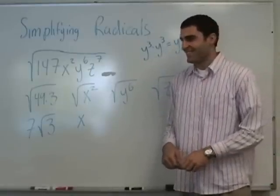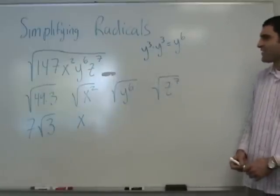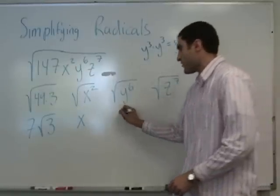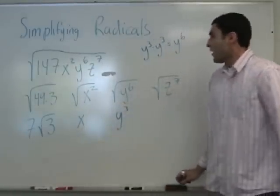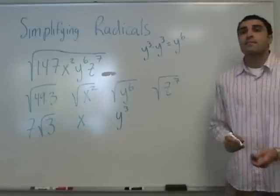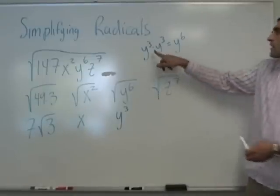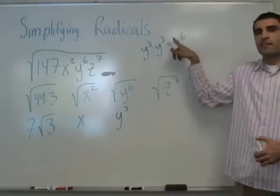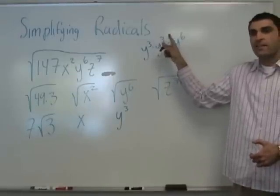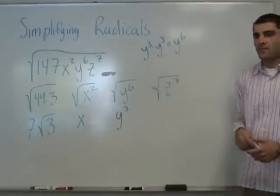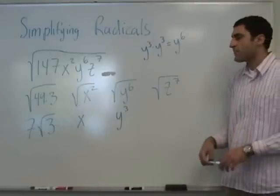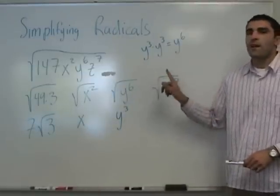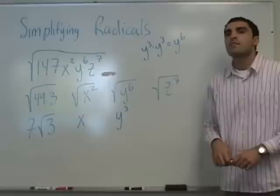Okay. So the square root of y to the sixth is y cubed. Any questions? Now over here — how is y to the sixth y cubed? Y cubed times y cubed is y to the sixth. Remember the rule for adding exponents? It looks weird, because we add the exponents. Y cubed times y cubed is y to the sixth.